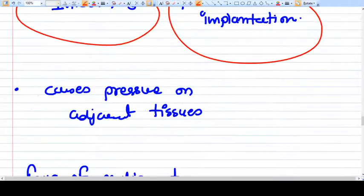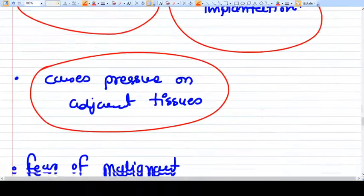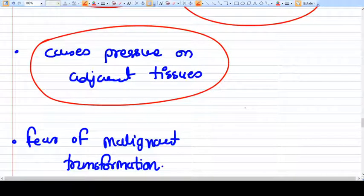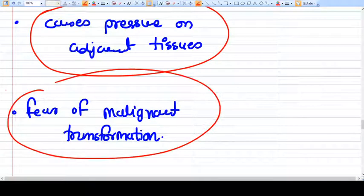Sometimes the fibroid becomes large, more than four centimeters. Such big fibroids cause pressure symptoms to adjacent tissues of the uterus. Some people with bigger fibroids fear that the fibroid can turn into malignant transformation.